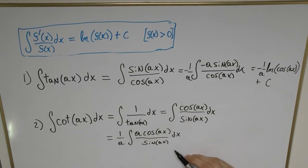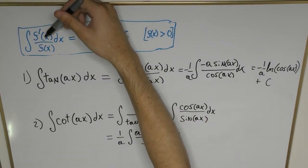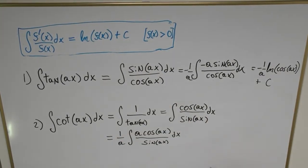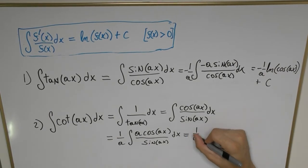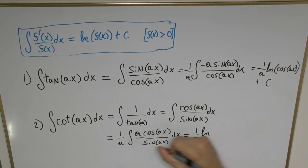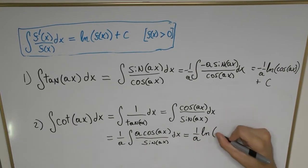This gives us exactly what we want: a rational function of the form outlined here. This results in 1 over a times the natural log of sine of ax plus the constant c.